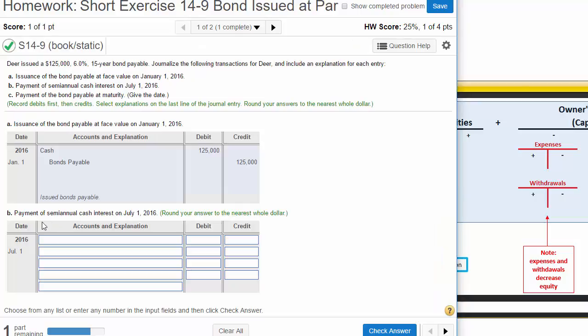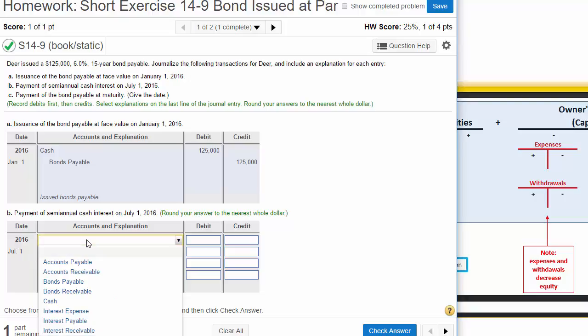Now we're going to pay semi-annual interest in cash on July 1st. Notice we issued the bonds payable on January 1st. Bonds payable pay interest every six months. So six months later, on July 1st, we need to record interest expense.